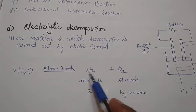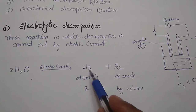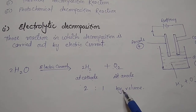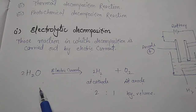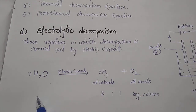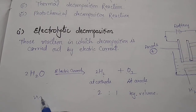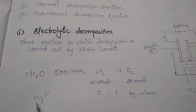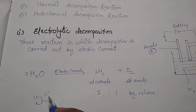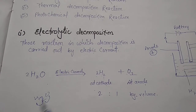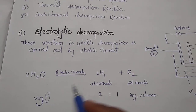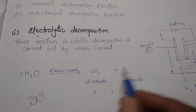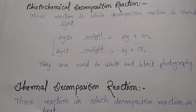We can observe that there are two volumes of hydrogen and one volume of oxygen. This is because water is also formed from two parts of hydrogen and one part of oxygen (H₂O). That is why electrolysis of water gives two volumes of hydrogen and one volume of oxygen.